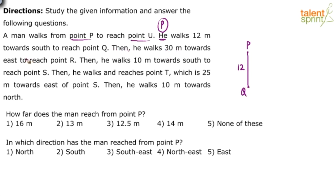Then he walks 30 meters towards east to reach point R. This is point R. Then he walks 10 meters towards south to reach point S. This is point S.